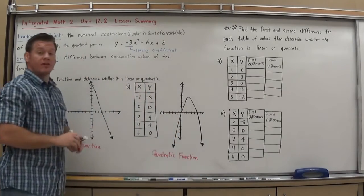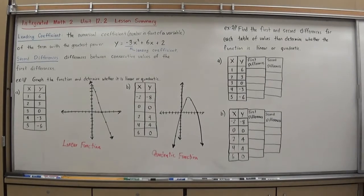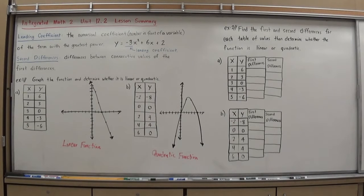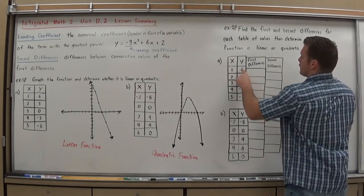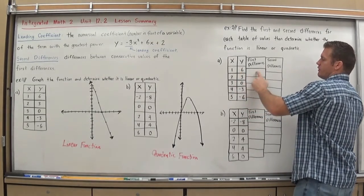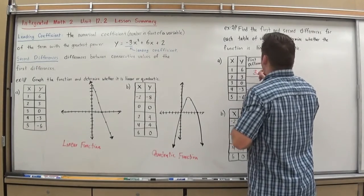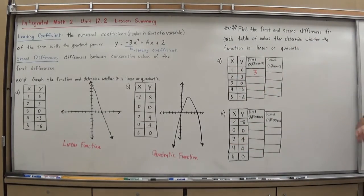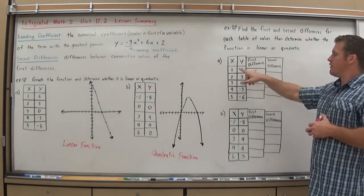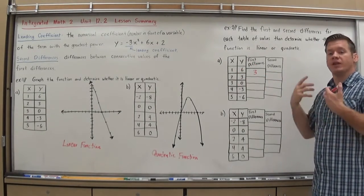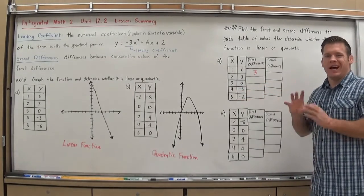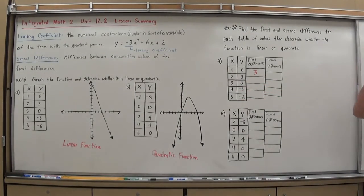That's really it for graphing: can you graph the table and identify what you're looking at. Now for something a little different — we're going to examine first and second differences in a table to determine if it's linear or quadratic without graphing. The first difference is the difference between the y values from one row of the table to the next. One key requirement: the x values must be going up by a consistent amount. If the x values are jumping around inconsistently, you can't use this method.